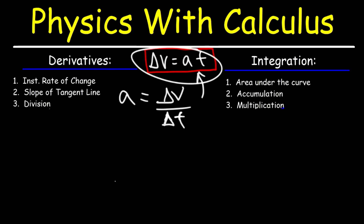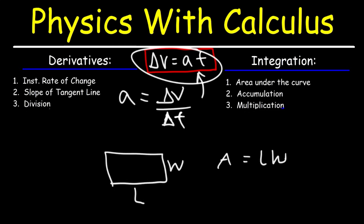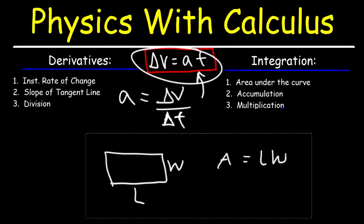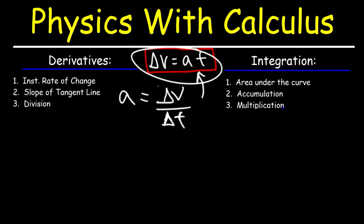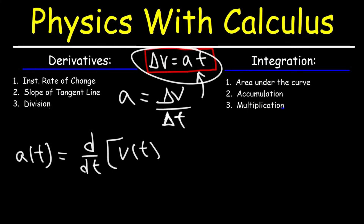When you find the area of a rectangle, it's length times width — you're multiplying. Now for the other formula: acceleration is the change in velocity divided by the change in time, so we're dealing with division. This tells us that acceleration is the derivative of velocity — it's the instantaneous rate of change of the velocity function. To find the acceleration function, differentiate the velocity function with respect to time.